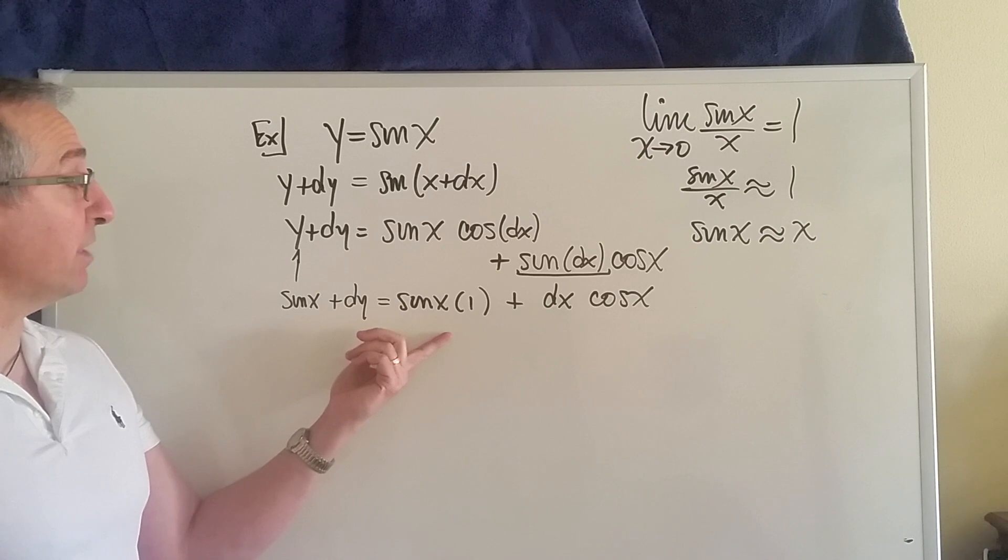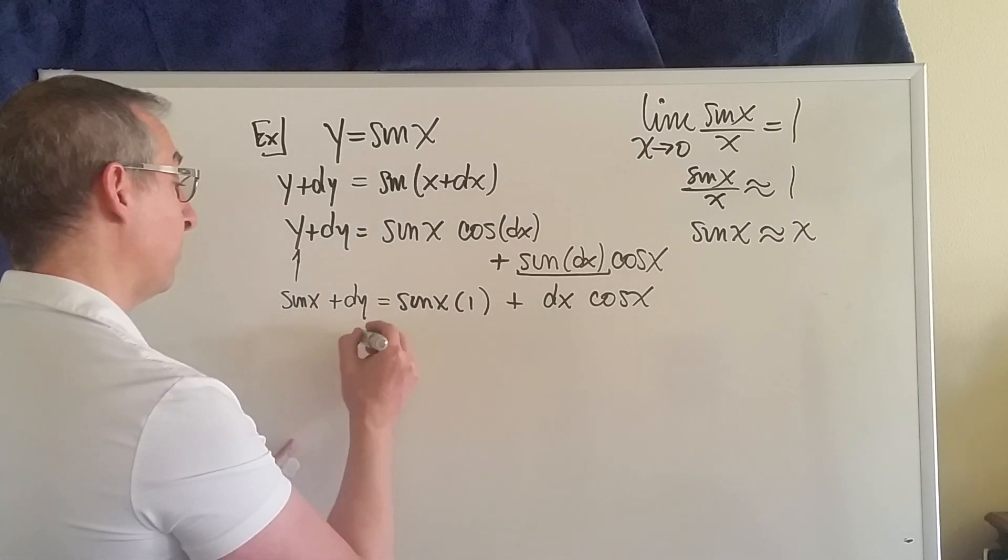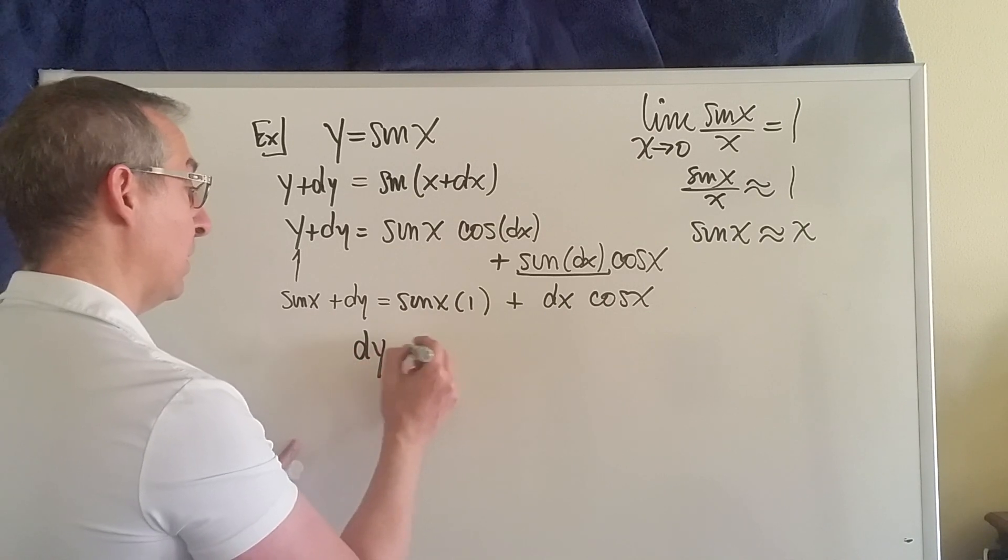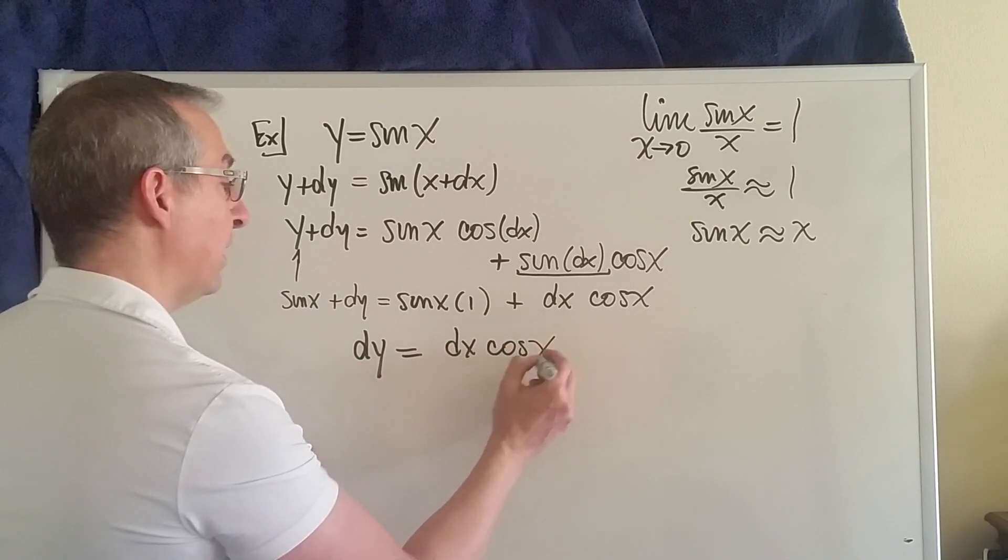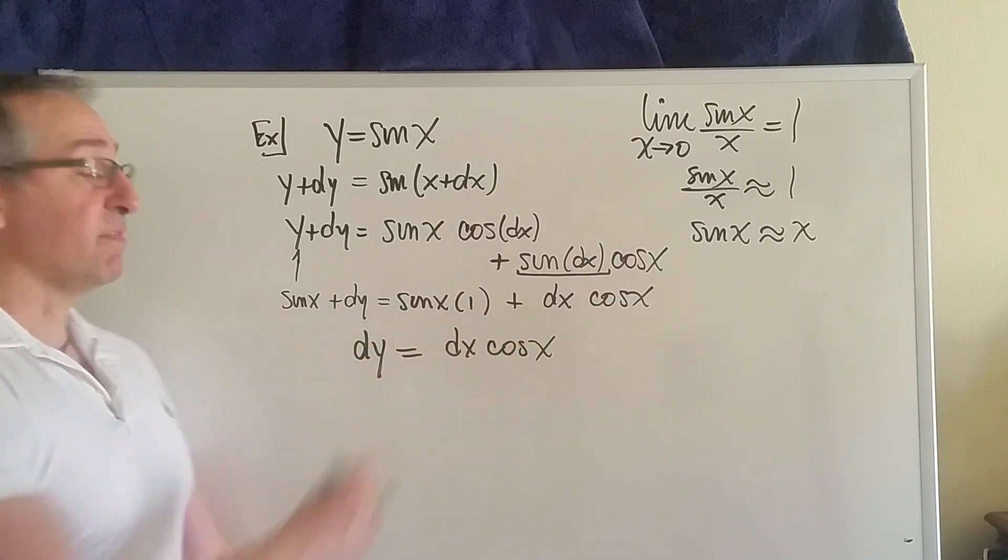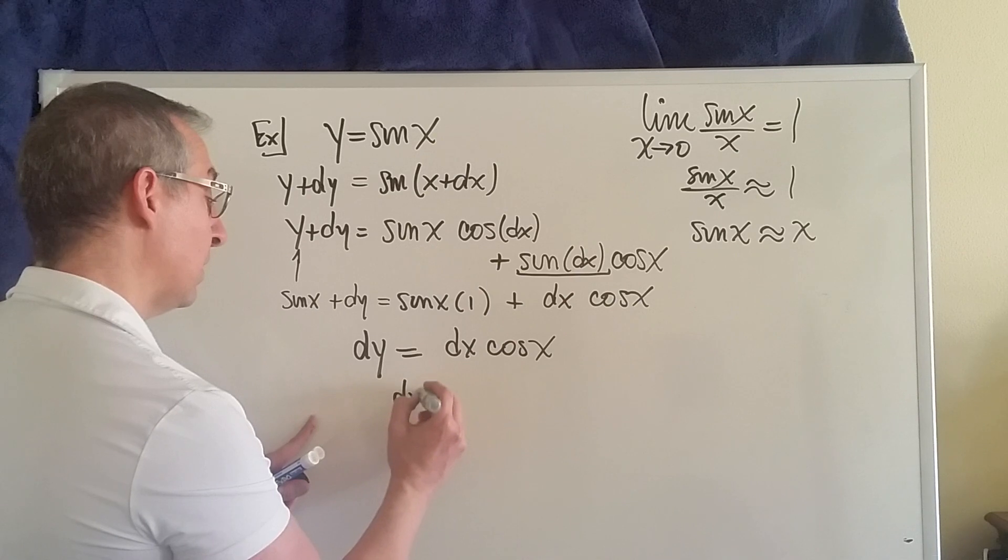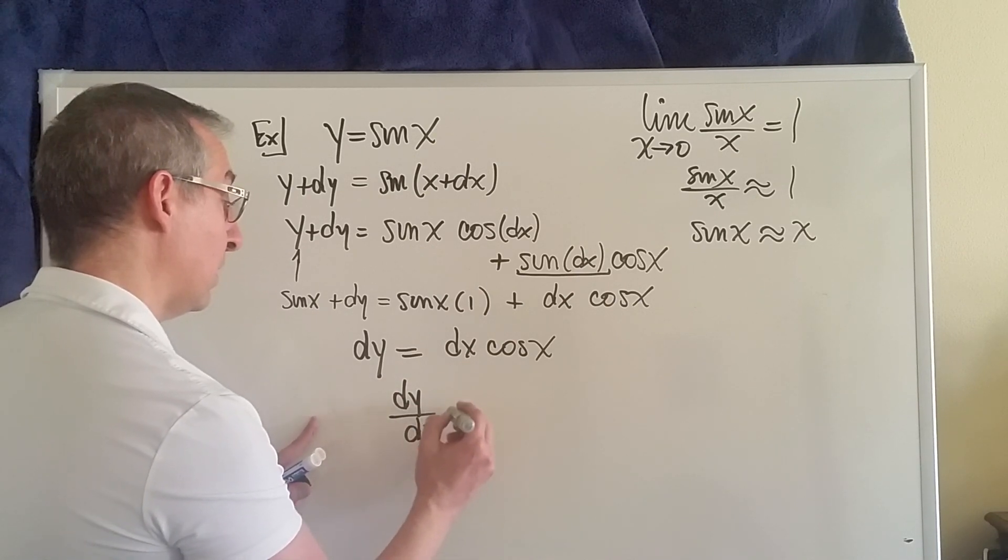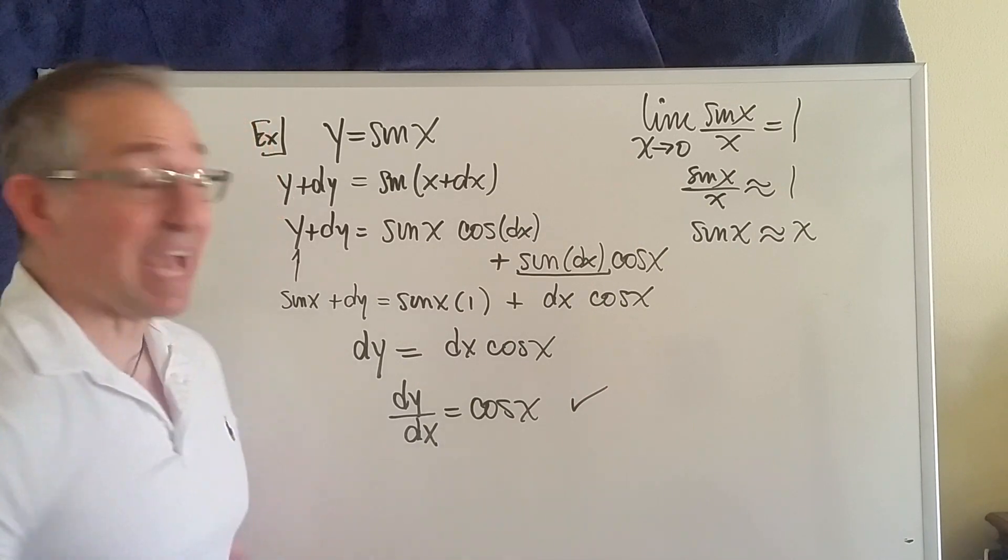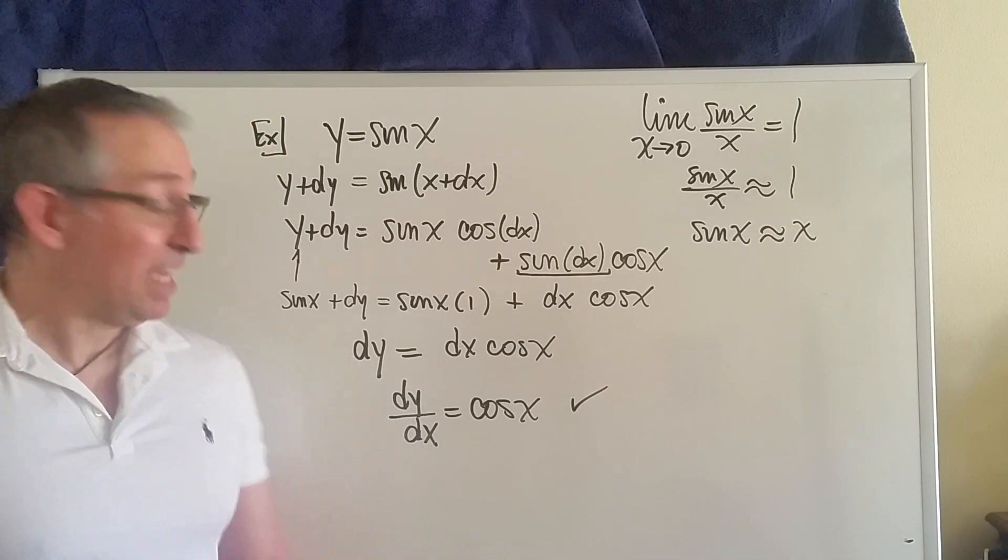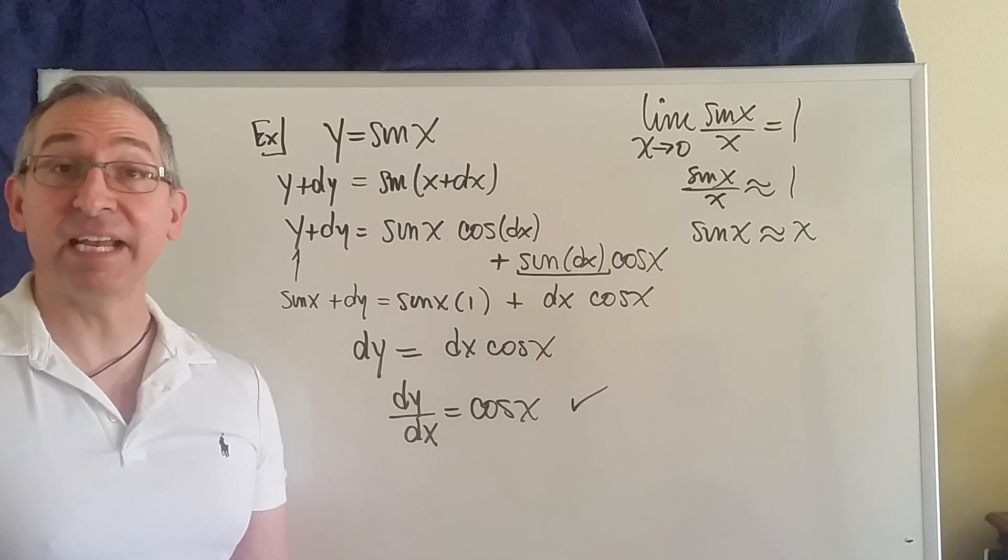Next, divide out both sides by dx. So dy over dx equals cos(x). Exactly as we would have expected. The ratio of the differentials dy to dx is equal to the cosine of x.